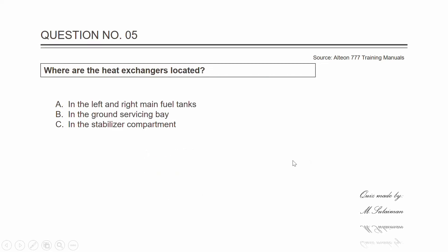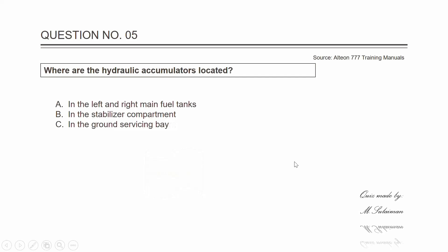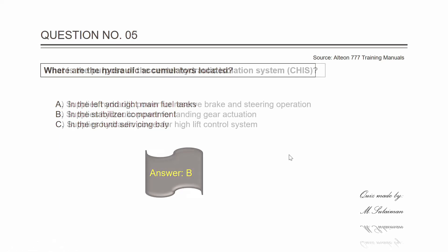Question five: where are the heat exchangers located? The answer is A — in the left and right main fuel tanks. Question five: where are the hydraulic accumulators located? The answer is B — in the stabilizer compartment.